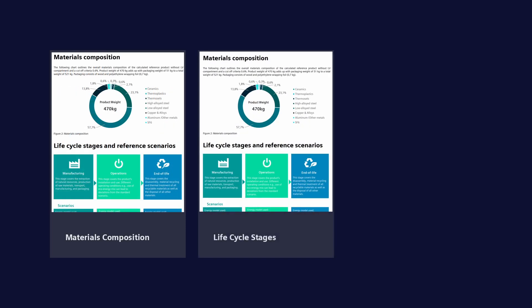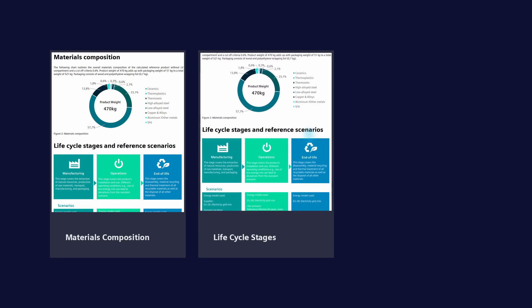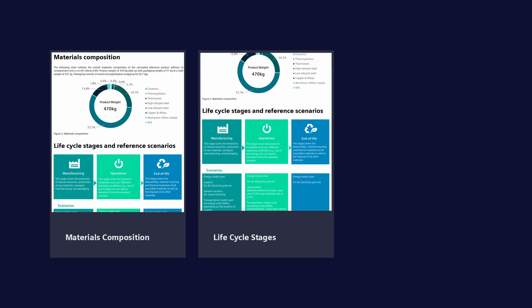In this section, the three life cycle stages of our products are depicted: manufacturing, operations including distribution to our customer, and finally the end-of-life stage. For locations where the electricity grid mix used is known, for example green electricity utilized at Siemens manufacturing locations, specific values are used. Otherwise, an average mix is used for calculating the life cycle assessment.